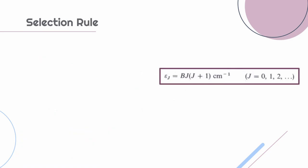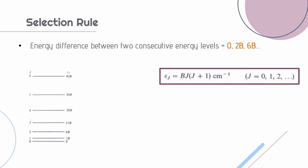Now that we know the energy expression, we now draw the diagram showing different energy levels. We have energy levels 0, 2B, 6B and so on corresponding to different J values like 0, 1, 2 and so on. But all transitions are not possible.